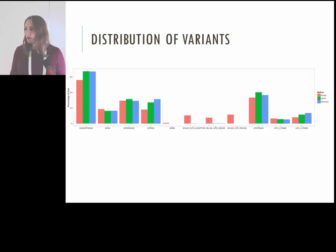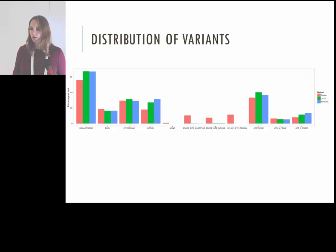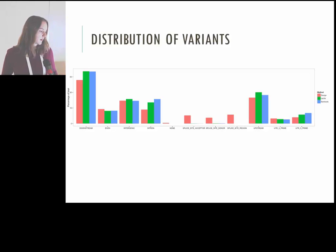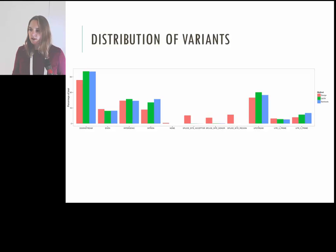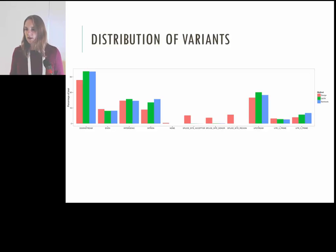Another data check was comparing the distribution of variants across genomic regions. The pink bars show the percentage of bases covered by the design across downstream, upstream, exon, UTR, and other regions. Comparing that to the variants called by GATK and SAMtools, we see more variants in the downstream and upstream regions and fewer in the exons, which is exactly what we would expect to see.